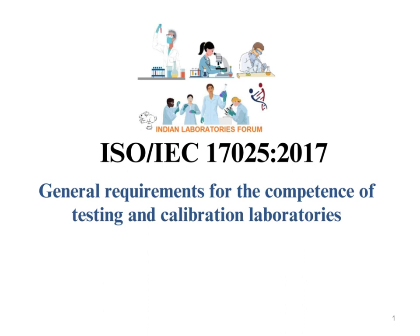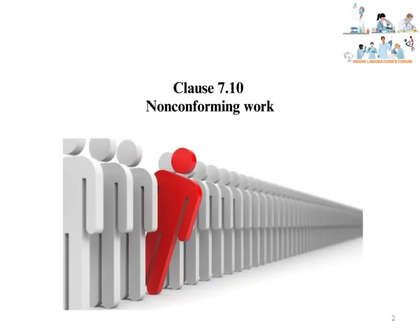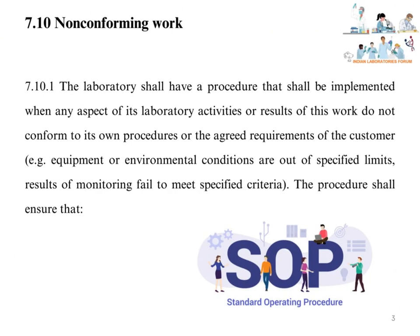Hope you have learned up to Clause 7.9. If not, please refer to our previous videos. Clause 7.10 covers Non-Conforming Work. The laboratory shall have a procedure that shall be implemented when any aspect of its laboratory activities or results of this work do not conform to its own procedures or the agreed requirements of the customer.